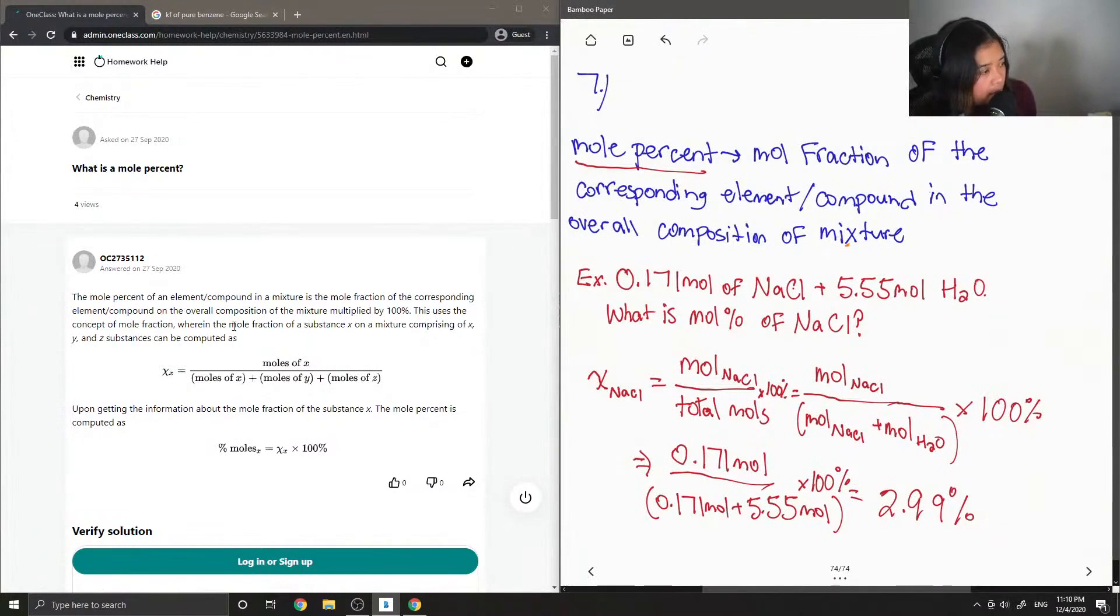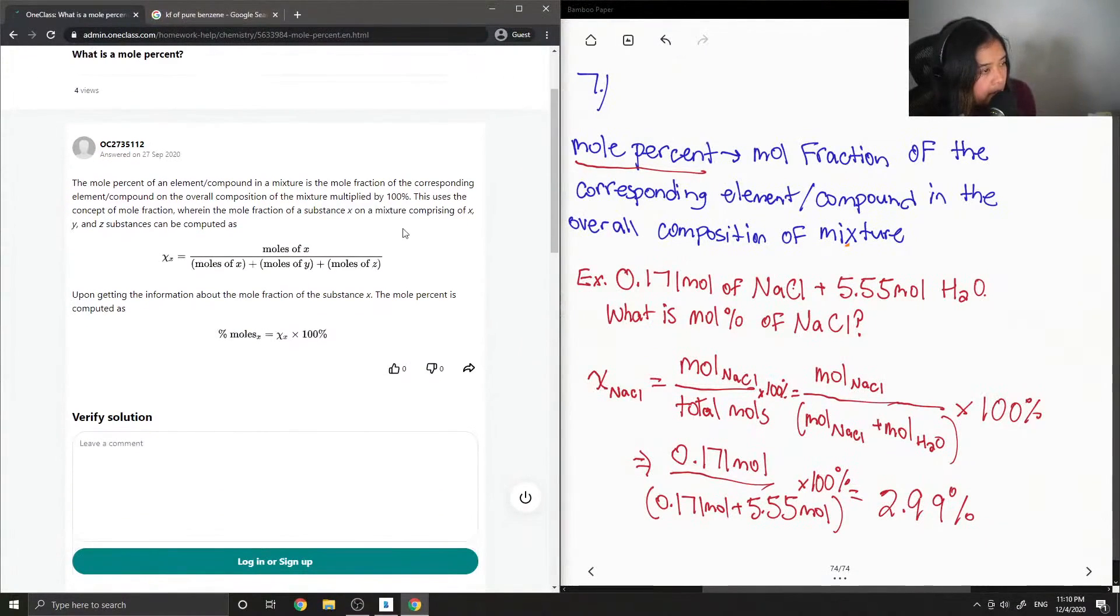This uses the concept of mole fraction wherein the mole fraction of a substance x in a mixture comprising of x, y, and z substances can be computed as... Okay, so the mole percent of x is equal to the moles of x divided by the moles of x plus the moles of y plus the moles of z.